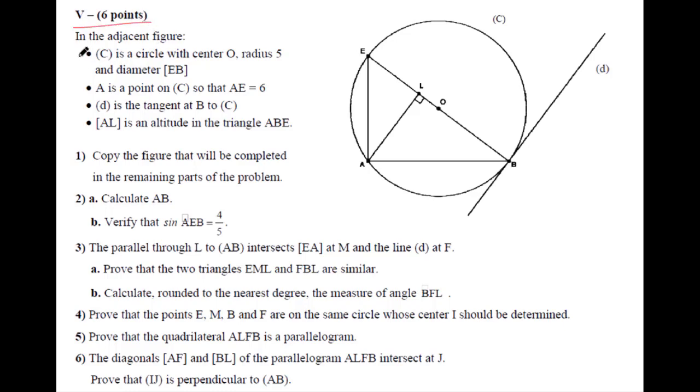We have a question M5. In the adjacent figure, C is a circle with center O, radius 5, and diameter EB. A is a point on C so that AE equals 6 cm. D is the tangent at B to C.